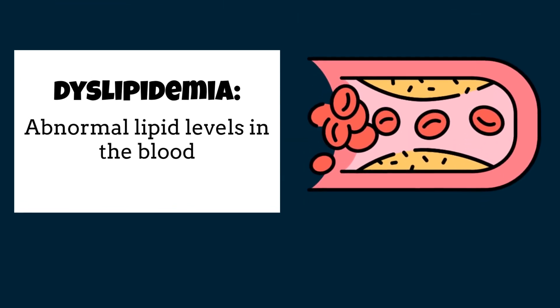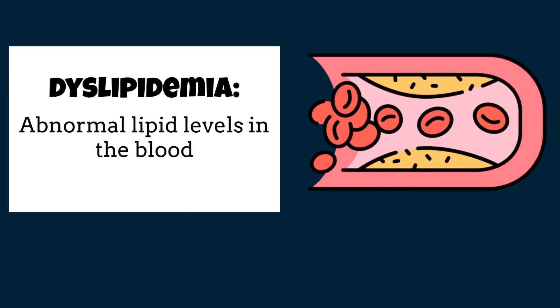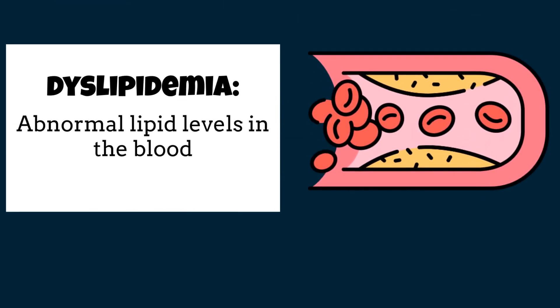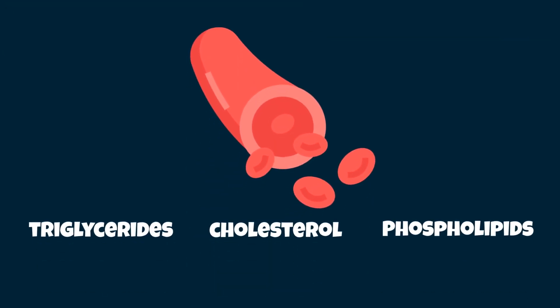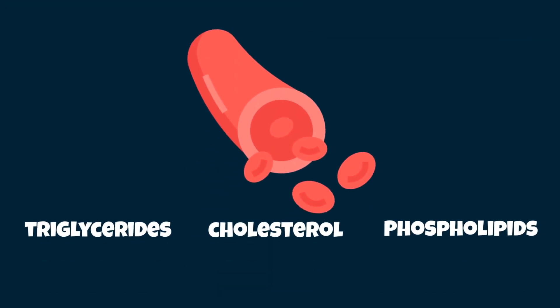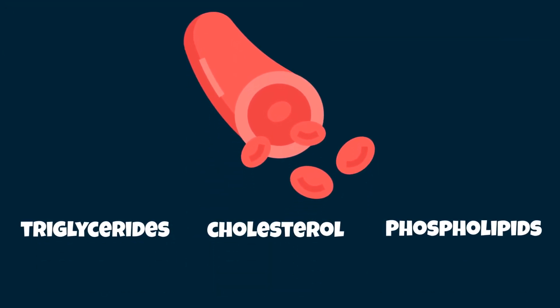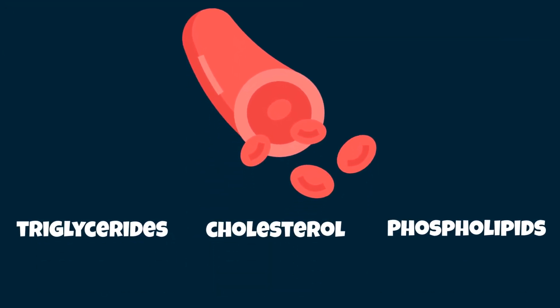Dyslipidemia, in short, is an abnormal amount of lipids in the blood. These lipids include triglycerides, cholesterol, and/or phospholipids. Not all lipids are bad — some are considered good lipids and are great for heart health. We will discuss them later in the video.